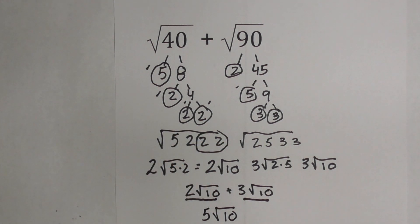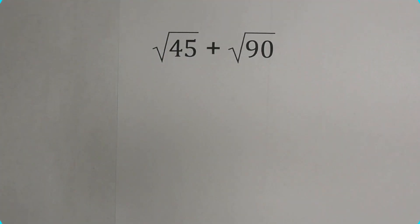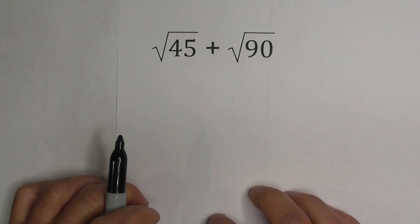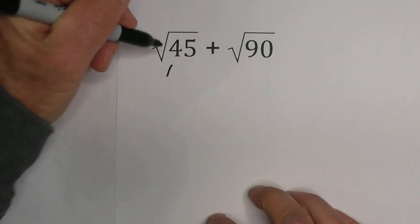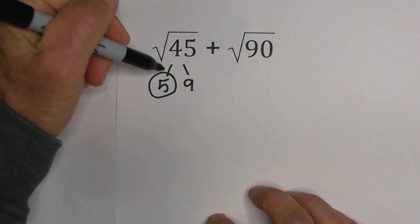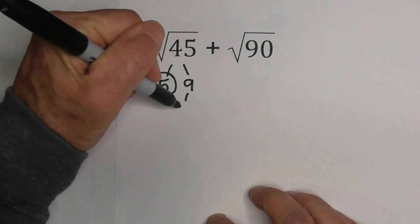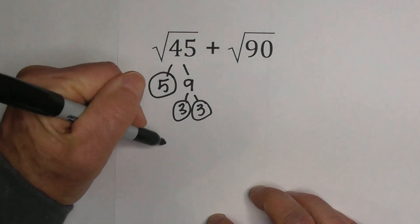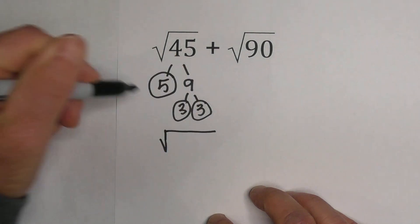Let's look at another example. Let's now add √45 plus √90. Again, I'm going to complete a factor tree. Let's go 5 times 9, circle the 5 because it is prime, and then we have 3 times 3.